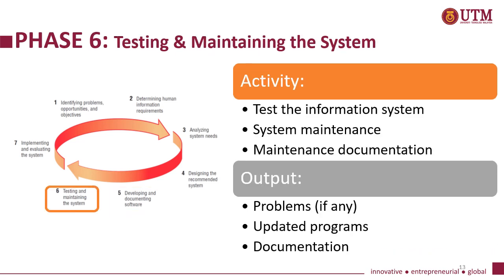Phase six: testing and maintaining the system. There are three main activities. One, test the information system. Two, system maintenance. And three, maintenance documentation. The main output for phase six includes problems, if there are any, updated programs and documentation.